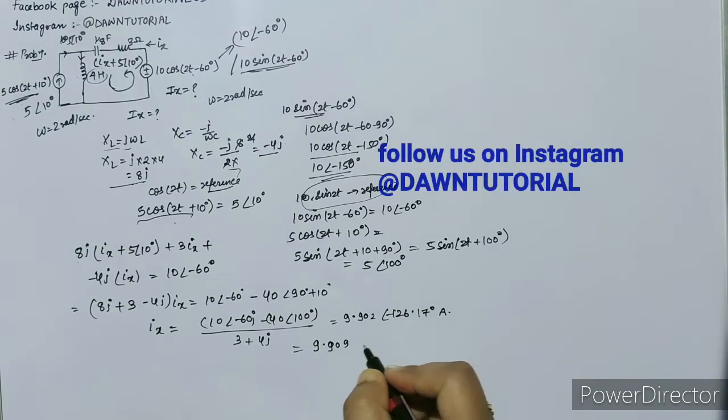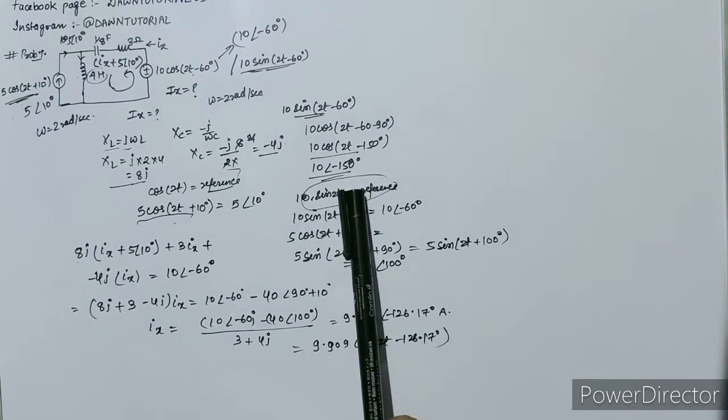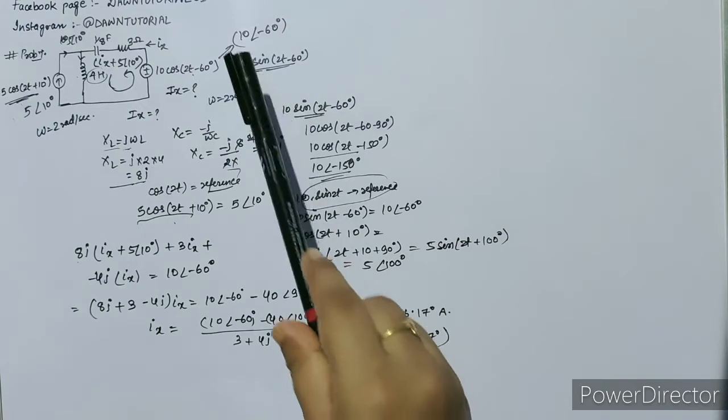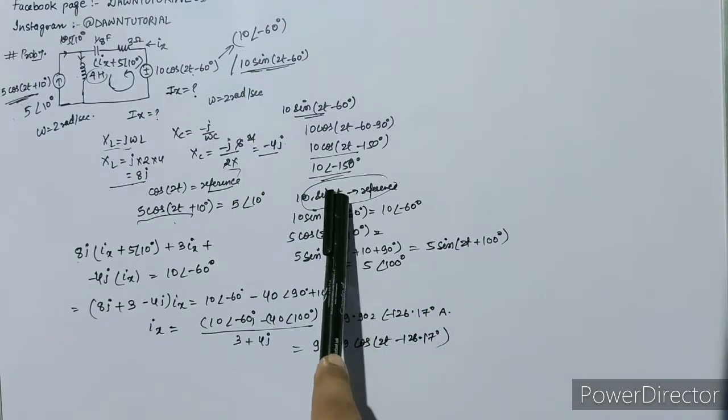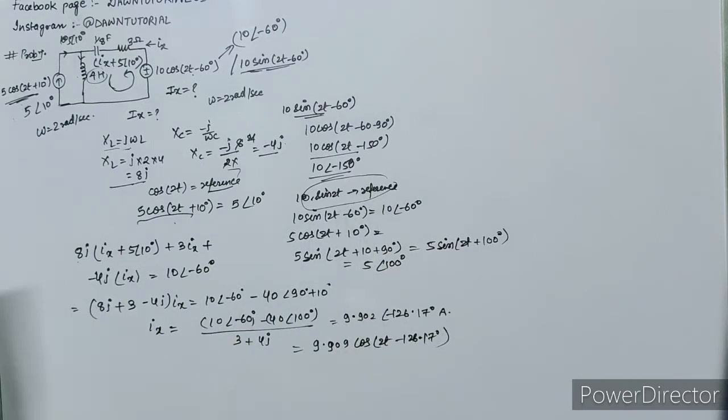We will write it as 9.902 cos(2t - 126.17°) ampere. So this is all about this problem.